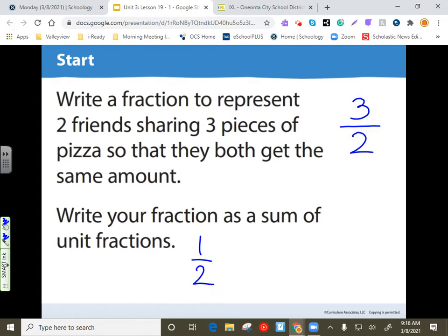And so each person will get half of slice one, half of slice two, and half of slice three. And if we add all those up, that gives us that three out of two.